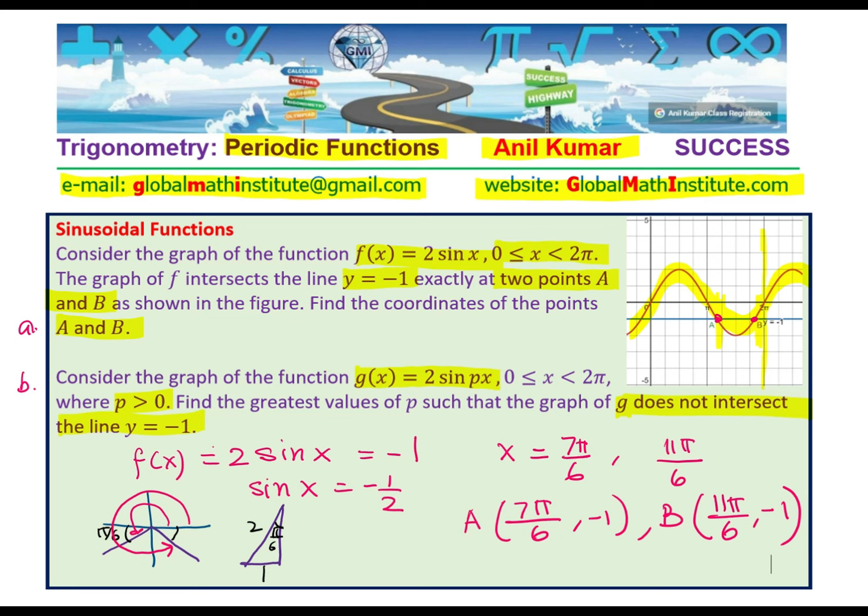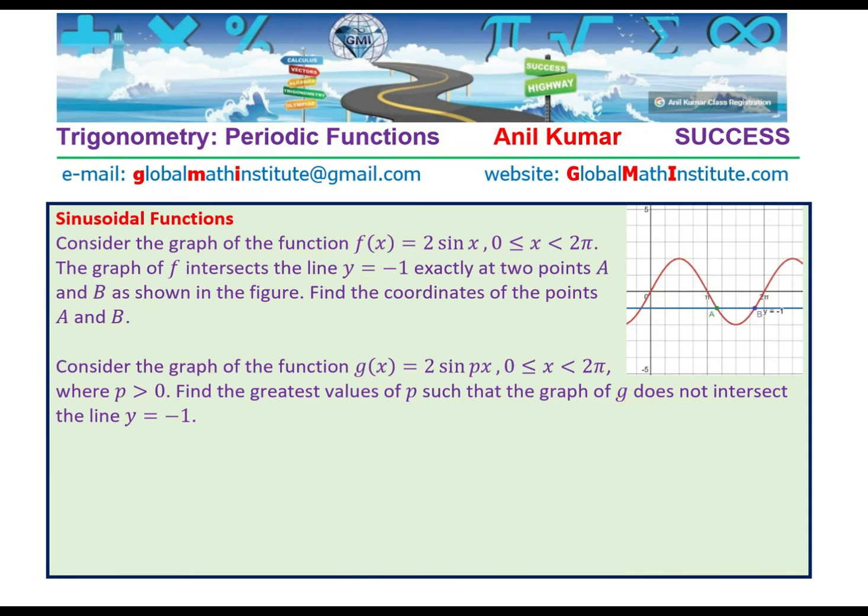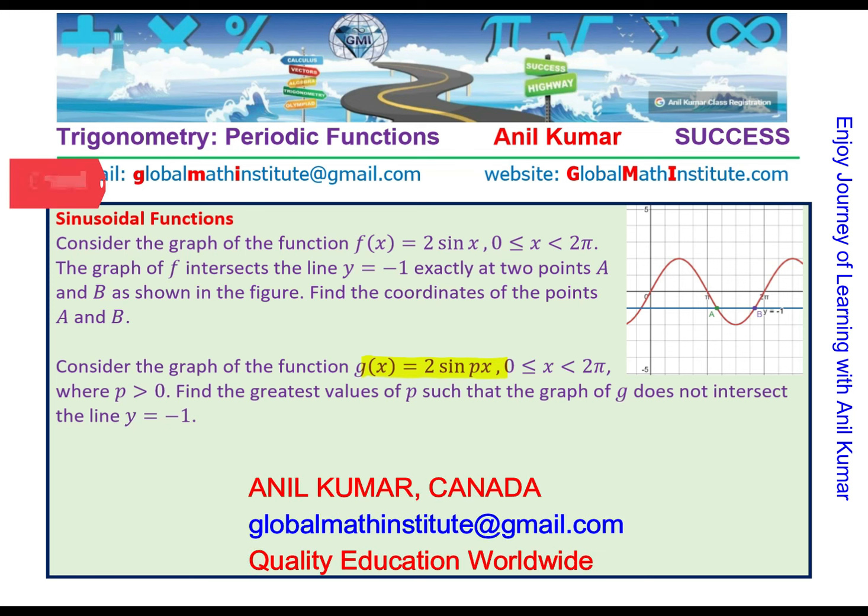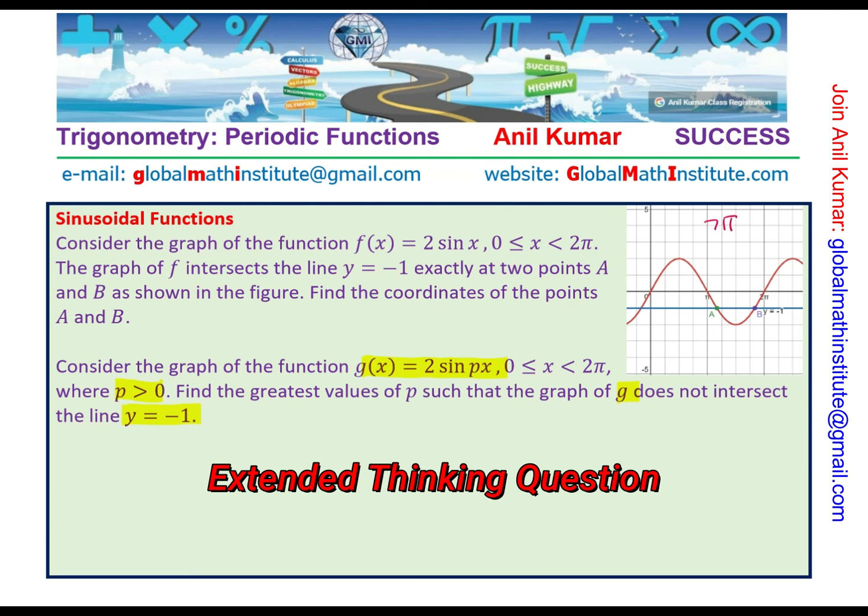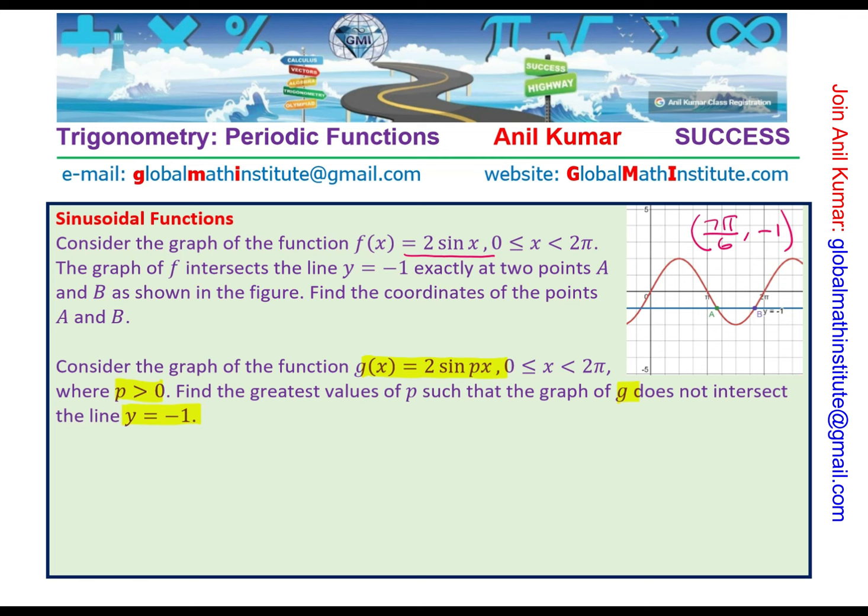Now, let us discuss the second part of this question, which is, consider the graph of g(x), which is 2 sin px, x between 0 to 2π and p > 0. Find the greatest value of p such that the graph of g does not intersect y = -1. What we found was this point here in earlier graph was at 7π/6. And that was the solution for 2 sin x.